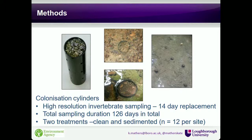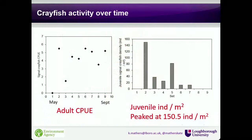Each treatment was replicated 12 times per site per sampling period. Crayfish activity was monitored by catch per unit effort for adults and by recording juveniles in colonization cylinders, standardized to individuals per meter squared. Most studies use trapping, which over-characterizes adult populations since they're not effective at looking at juveniles. Utilizing the colonization cylinders, I was able to get records of both adult and juvenile activity throughout summer — a novel way of monitoring juvenile densities.